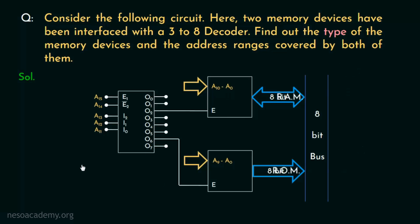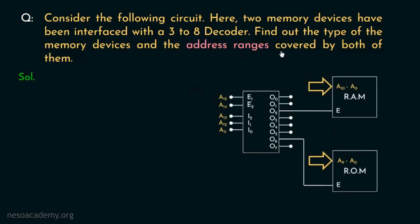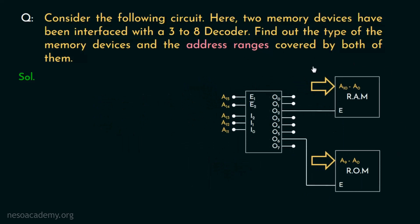Alright, since now we have figured out the types of devices, let's now move on to the next part. Let's find out the address ranges covered by the RAM and the ROM. If we consider the address lines, they are A15, A14, A13, so on to A0. Now before getting into the details, let's first observe the decoder.